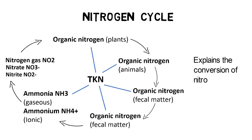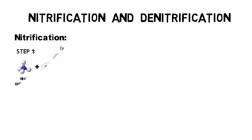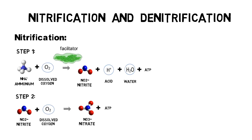The nitrogen cycle describes how nitrogen circulates among atmosphere, terrestrial, and marine ecosystems. The conversion from ammonia to nitrite and then to nitrate is called nitrification, and describes a two-step oxidation process facilitated by heterotrophic bacteria.